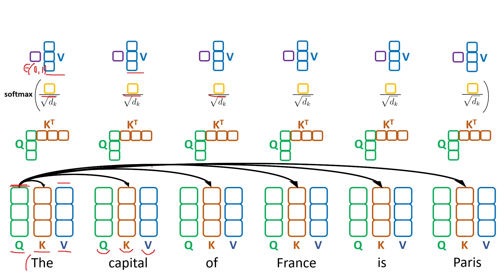This value vector here corresponds to each respective token. After you multiply the scalar value with the value vectors, you basically sum everything up, and then you obtain the representation of the token given by the attention layer.